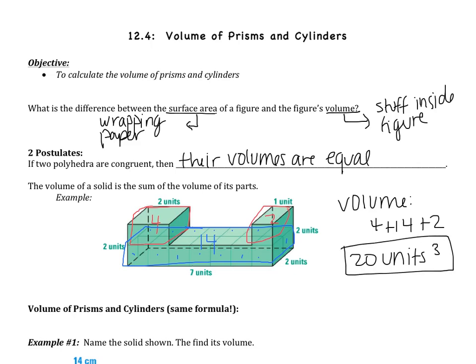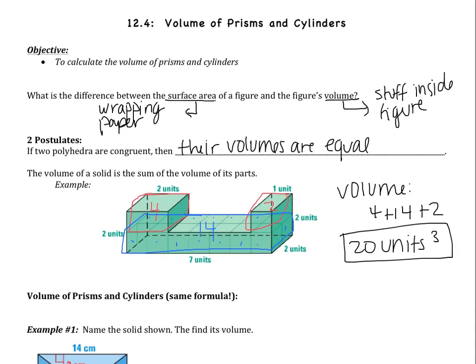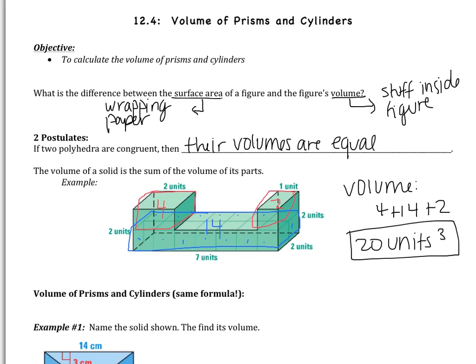Volume is always cubed. Volume is three-dimensional, whereas area is just two-dimensional. So volume is always going to be inches cubed, or units cubed, whatever the units happen to be. Now we're going to get into the meat of this section: how do you calculate the volume of prisms and cylinders? They have the same formula — volume equals big B multiplied by H, where big B is the area of the base and H is the height of the figure.